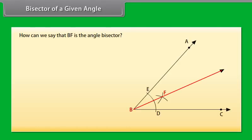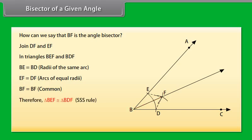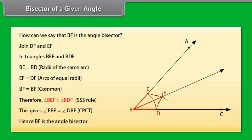How can we say that BF is the angle bisector? Let us prove this. Join DF and EF. In triangles BEF and BDF: BE is equal to BD because these are the radii of the same arc; BF is equal to BF, common. Therefore, by SSS congruence rule, triangle BEF is congruent to triangle BDF. This gives angle EBF is equal to angle DBF by CPCT. Hence, BF is the angle bisector.